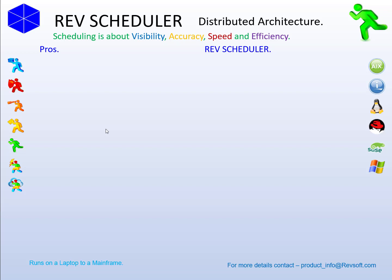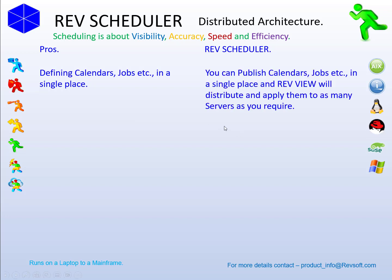When designing the distributed model, we looked at things we liked in the central model. The main advantage was being able to define calendars and jobs in a single place. So in RevScheduler, you can define a calendar or a job on any server in your network and publish it to as many other servers as you would like. When you update that calendar or job, those changes are automatically sent and applied to the other servers as well. RevView is the underlying software that enables this, because RevView speaks all languages on all server types.